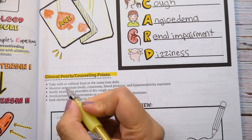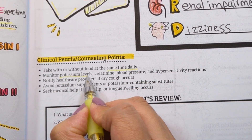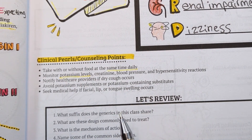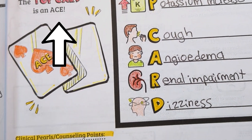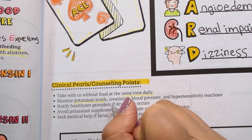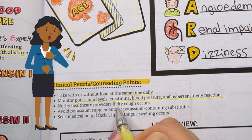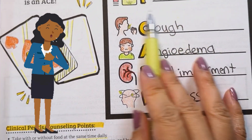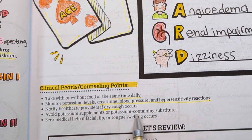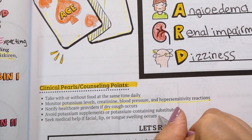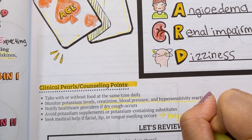Some counseling points to keep in mind: ACE inhibitors can be taken with or without food, but preferably at the same time every day. We want to monitor potassium levels due to the side effect of hyperkalemia. We also want to monitor creatinine, blood pressure, and hypersensitivity reactions. Educate the patient that a dry cough can occur, but if it persists or is bothersome, they should let their healthcare provider know. Seek medical attention if symptoms of angioedema such as facial, lip, or tongue swelling occur, as they may be experiencing a serious allergic reaction to the medication.